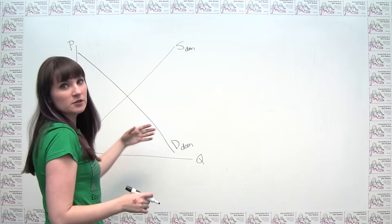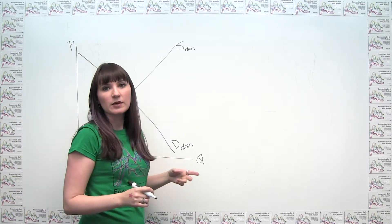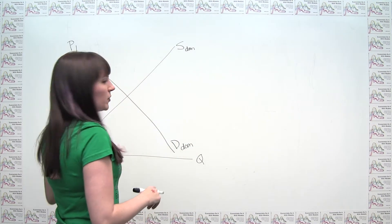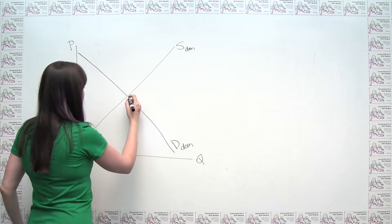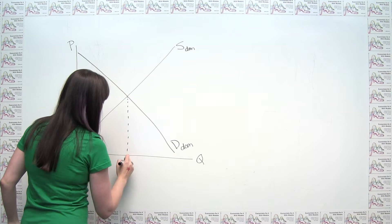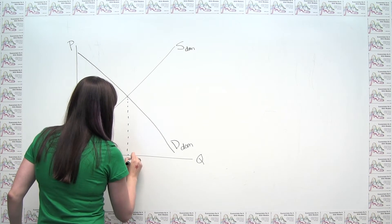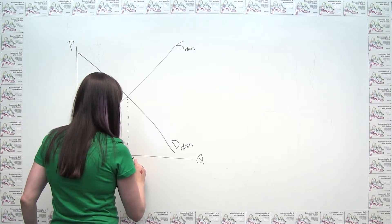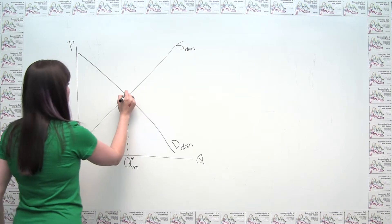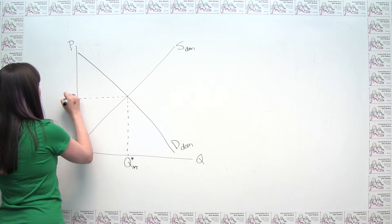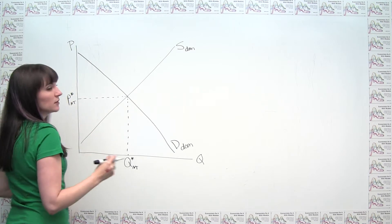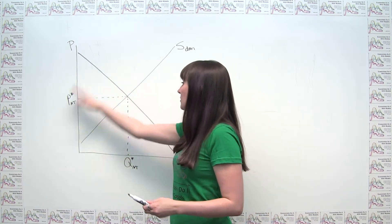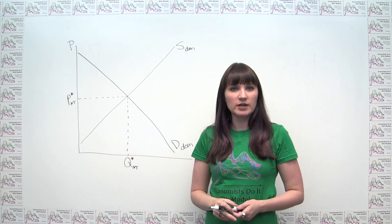If there's no trade — a situation economically referred to as autarky, meaning not trading with anybody — our equilibrium price and quantity is just at the intersection of domestic supply and domestic demand. I'll call the equilibrium quantity Q star sub NT for no trade, and the market equilibrium price P star sub NT, again for no trade. This is our starting point for thinking about how things change once we introduce international trade.